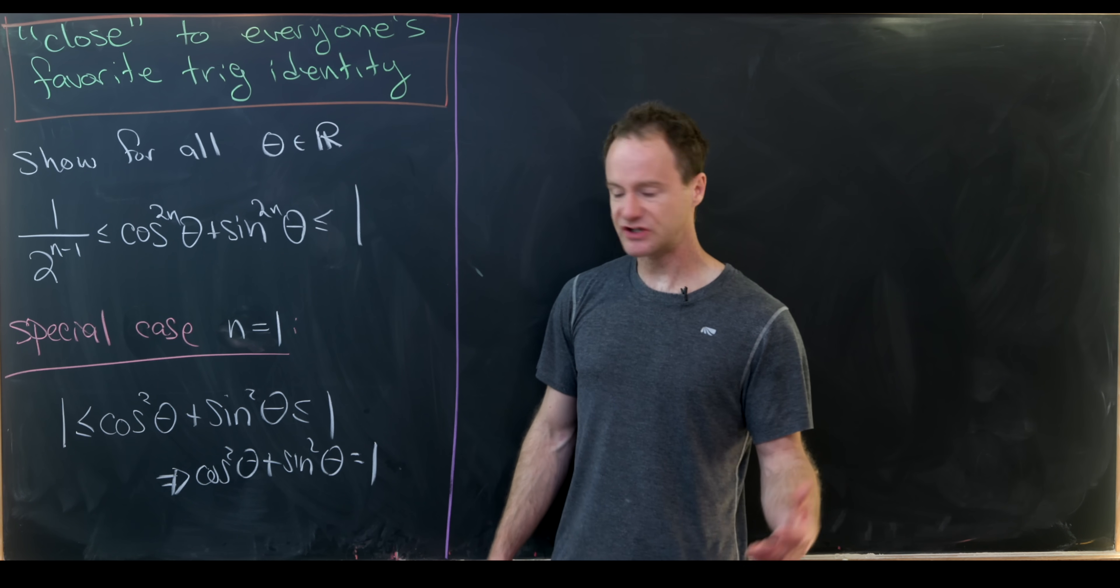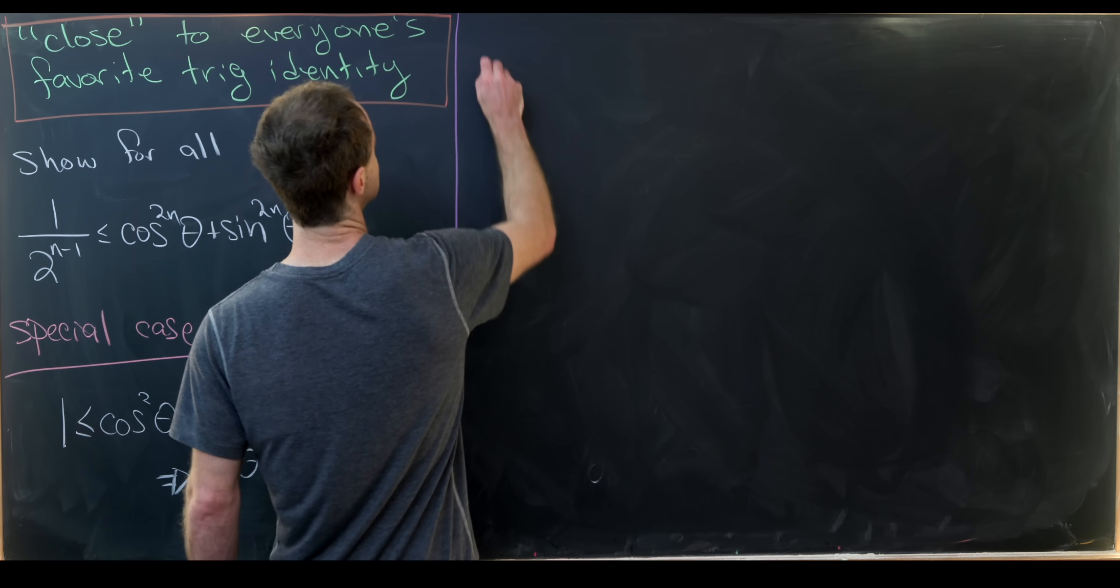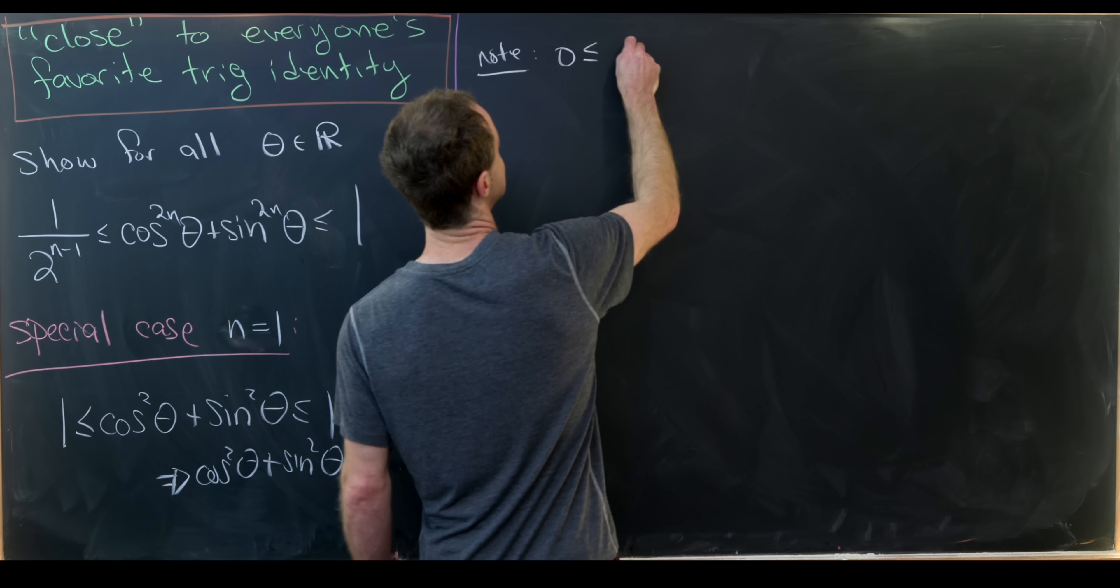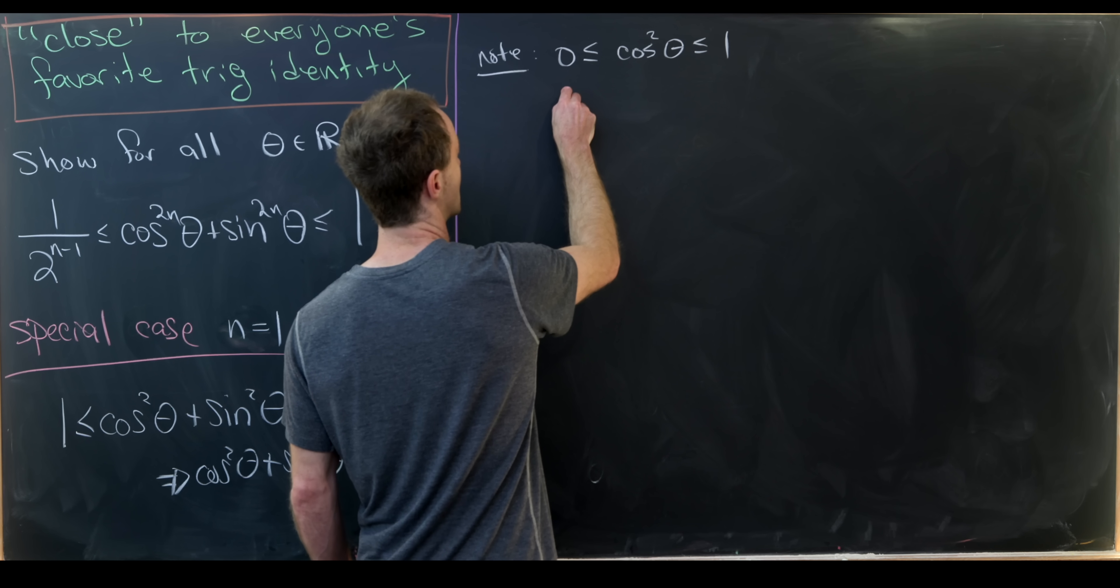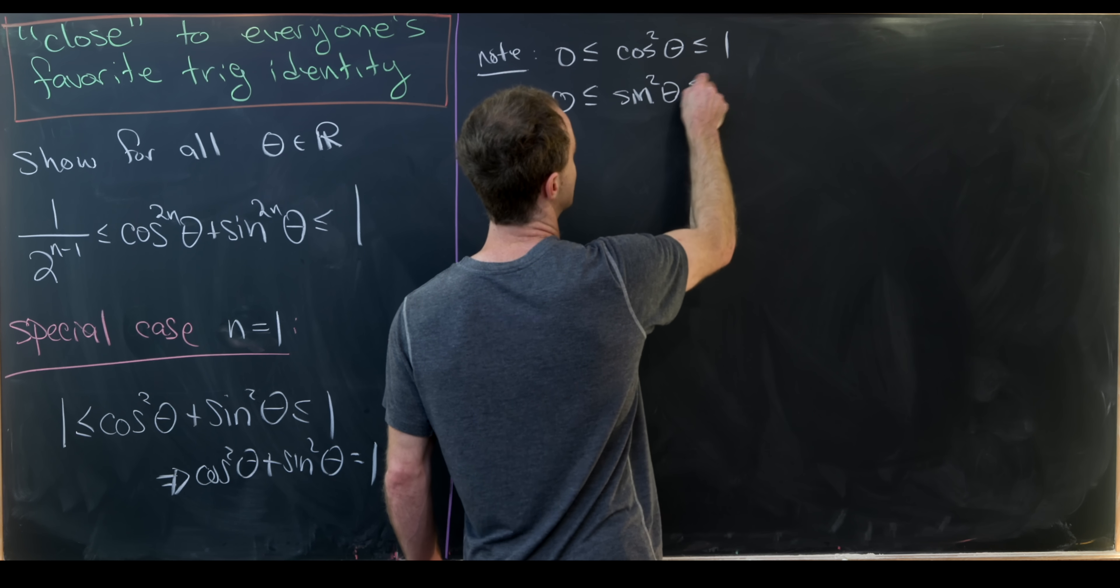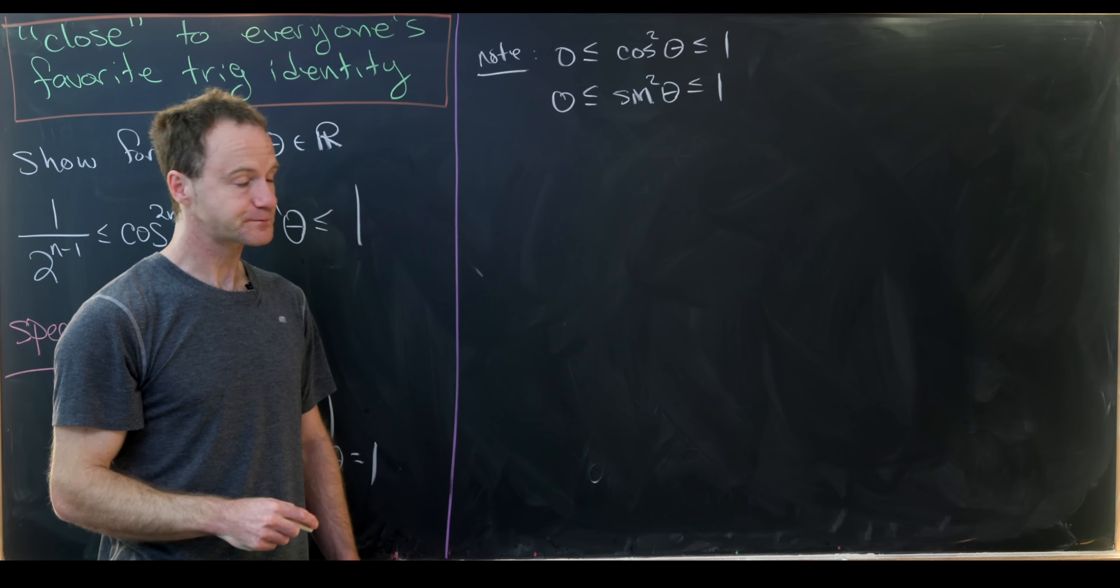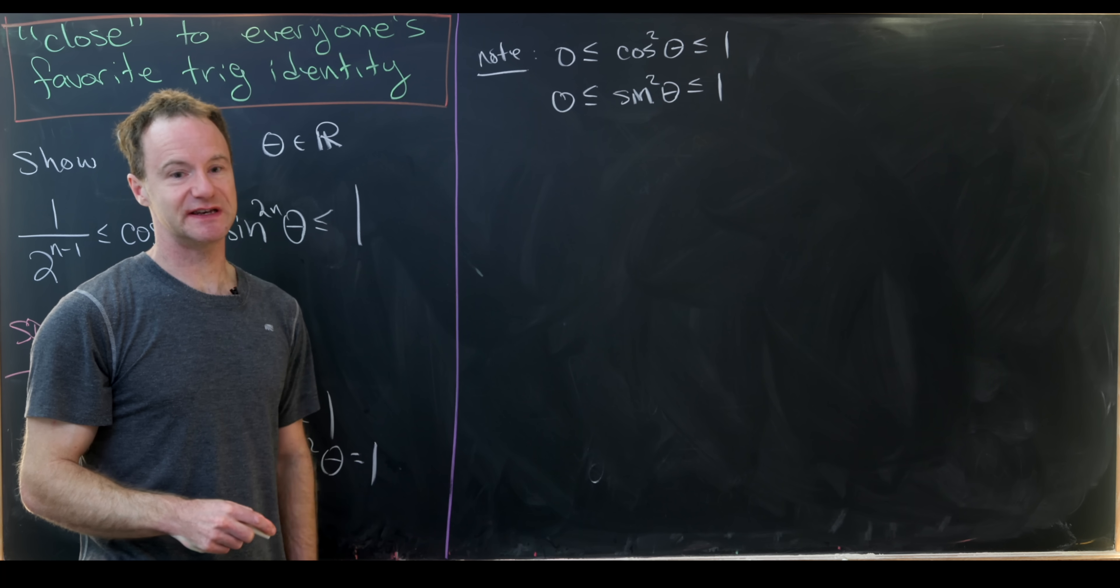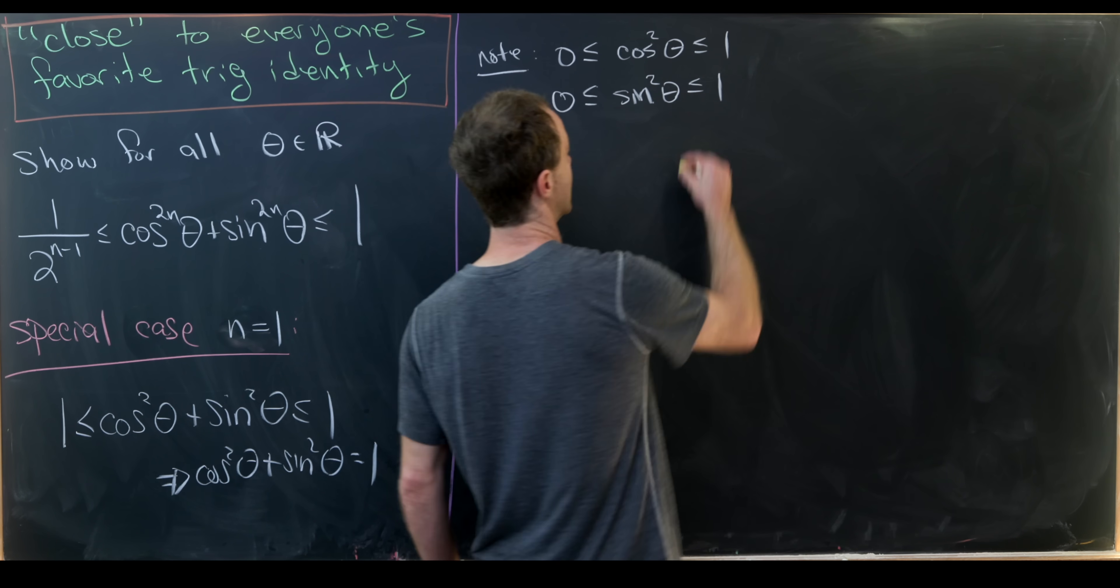So let's start with the right-hand portion of this inequality. So let's note that we know that 0 is less than or equal to cosine squared theta, which is less than or equal to 1. And 0 is less than or equal to sine squared theta, which is itself less than or equal to 1. And that's because cosine and sine are between negative 1 and 1. So when you square them, you get something between 0 and 1.